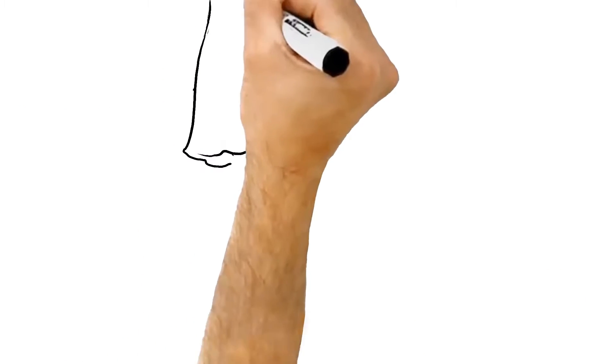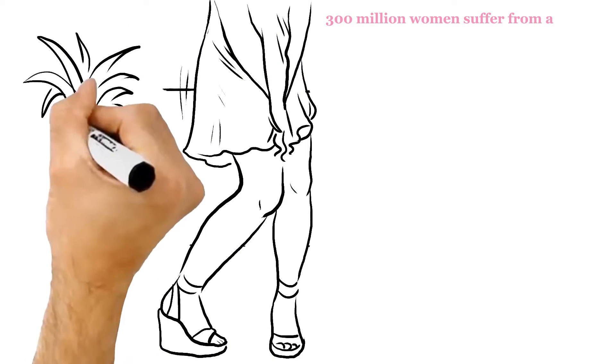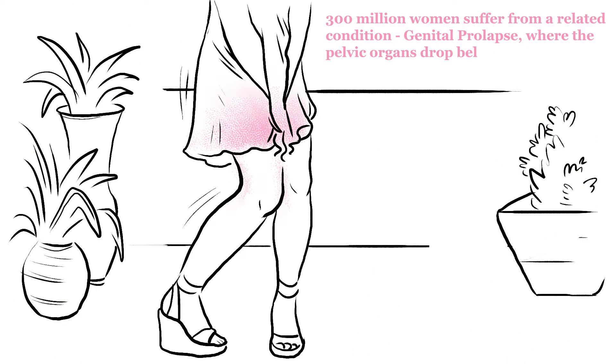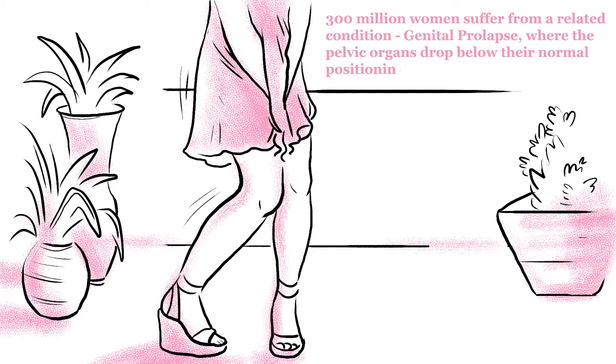Another 300 million women suffer from a related condition, genital prolapse, where the pelvic organs drop below their normal positioning.